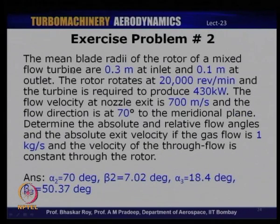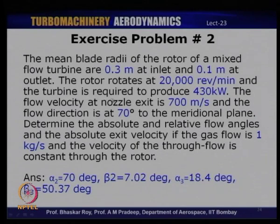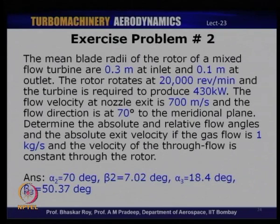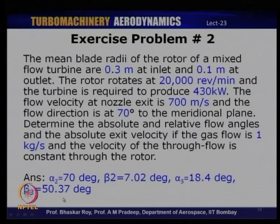Exercise problem 2: The mean blade radii of a mixed flow turbine rotor are 0.3 m at inlet and 0.1 m at outlet. The rotor rotates at 20,000 rpm and the turbine produces 430 kW. The nozzle exit flow velocity is 700 m/s at 70° to the meridional plane. With gas flow rate of 1 kg/s and constant through-flow velocity, determine the absolute and relative flow angles and absolute exit velocity. Answers: alpha2 = 70°, beta2 = 7.02°, alpha3 = 18.4°, beta3 = 50.37°.